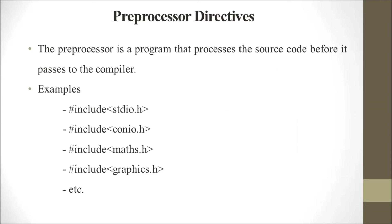The preprocessor is a program that processes the source code before it passes to the compiler. For example, #include <stdio.h> is used at the start of the program. This header file contains code associated with some internal functions.